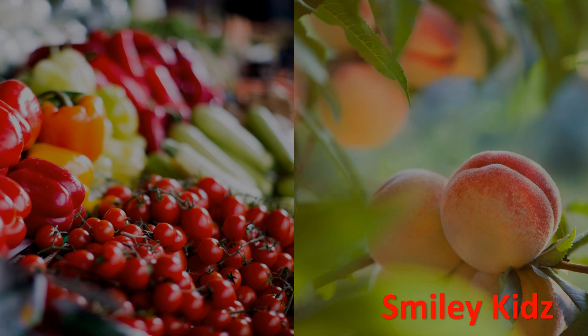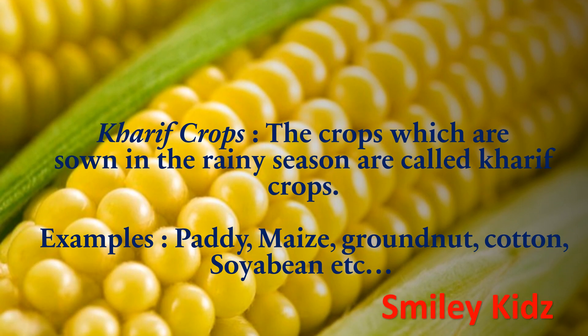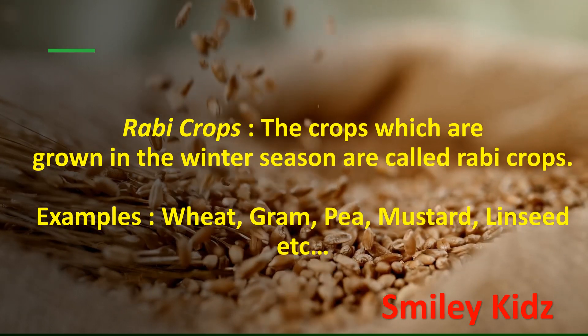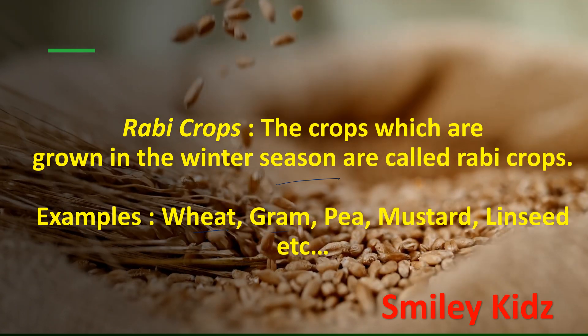The two broad cropping patterns are Kharif crops and Rabi crops. Kharif crops are those which are sown in the rainy season, for example paddy, maize, groundnut, cotton, soya bean, etc. Rabi crops are those which are grown in the winter season, for example wheat, gram, pea, mustard, linseed, etc.